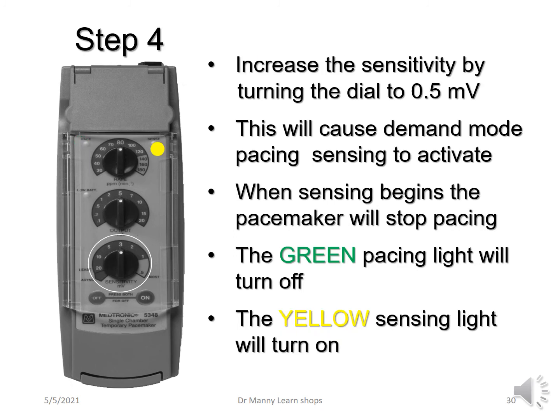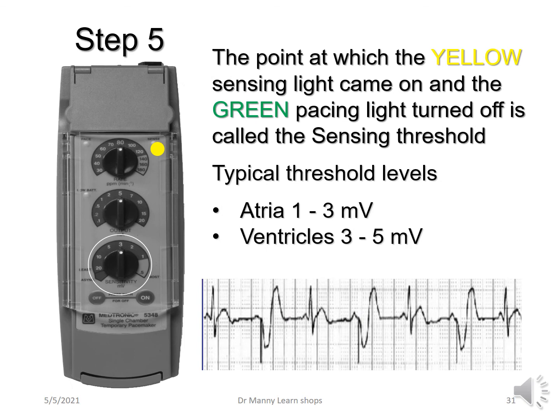Then you increase the sensitivity by turning the sensitivity dial to 0.5 millivolts. This causes demand mode pacing to occur and sensing to be activated. When sensing begins, the pacemaker will stop pacing — the green light turns off — and as soon as sensing commences, the yellow light comes on. Step five: this is the point at which the yellow sensing light came on and the green pacing light turned off — this is the sensing threshold. Typical sensing thresholds are one to three millivolts in the atria and three to five millivolts in the ventricles.